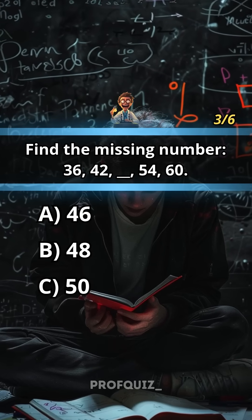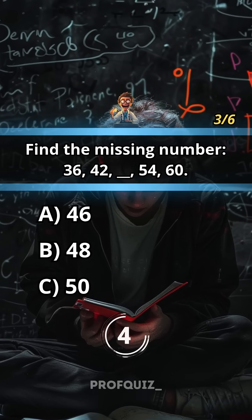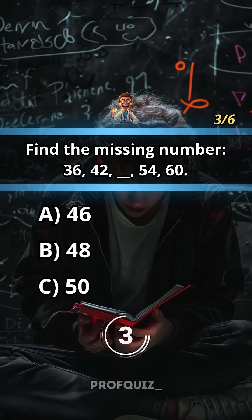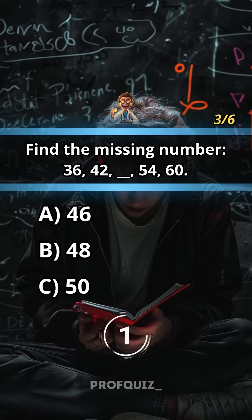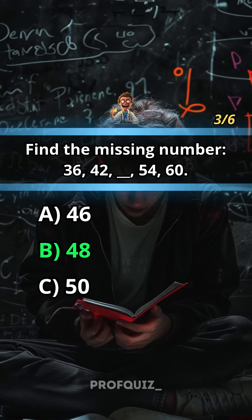Find the missing number: 36, 42, __, 54, 60. Answer: B, 48.